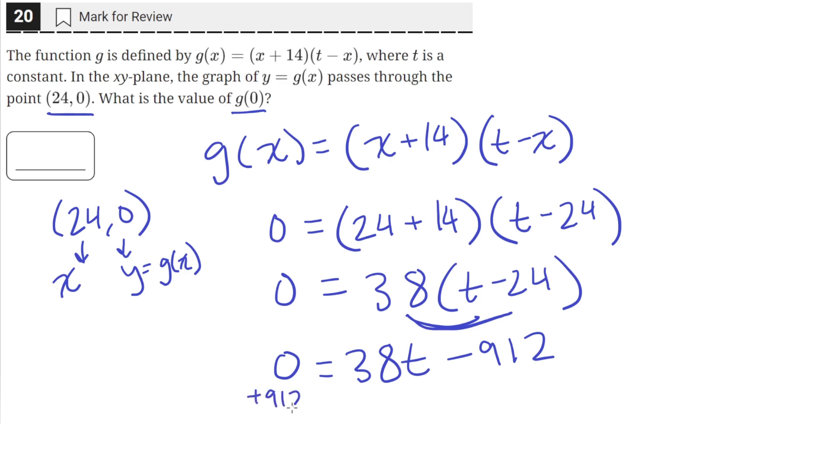Then we can add 912 to both sides. This will cancel out the 912 on the right and move the 912 to the left.